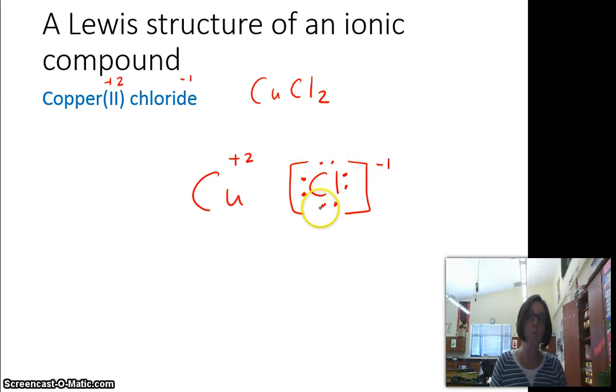But that only shows one of the chlorides from my formula, so on the other side, I would put the other chloride. So there's the 7 valence electrons it normally has. It gained one more, so I put brackets all around it, and a negative 1 charge. That would be a Lewis structure of an ionic compound.